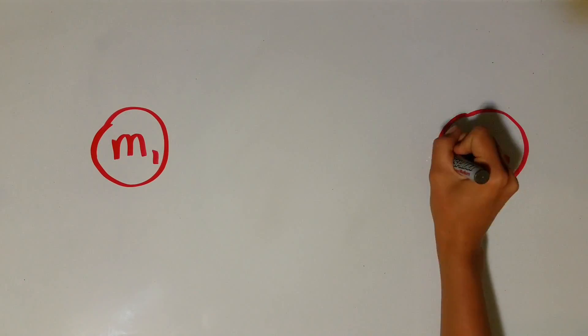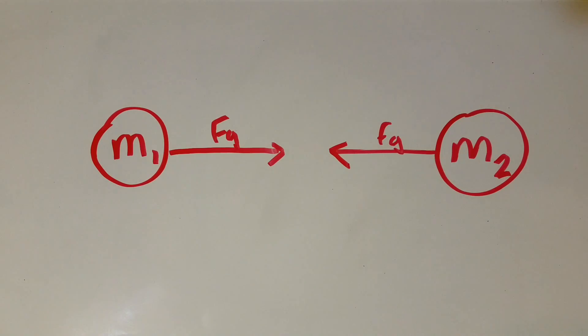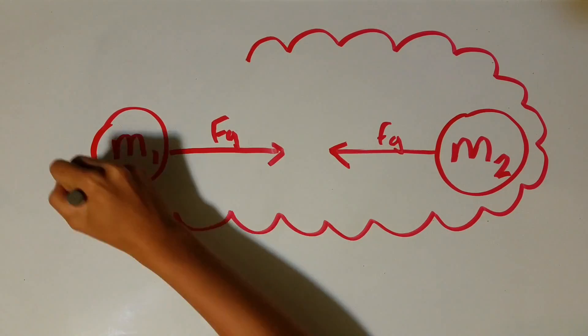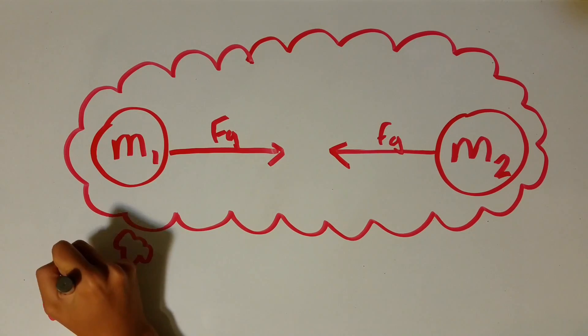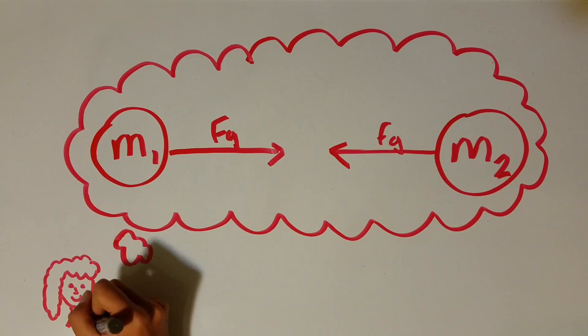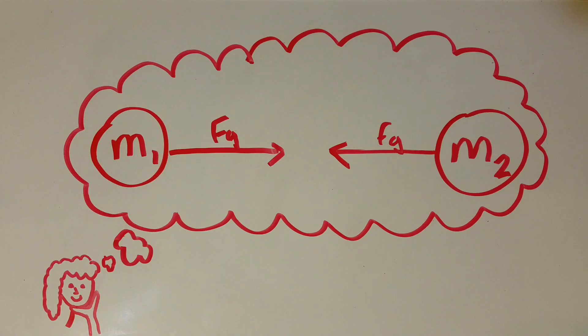However, we do know that it exists, and we know that any two masses are attracted to each other by a gravitational force. This was first published by Sir Isaac Newton, who went even further to find that these forces of attraction were directly proportional to the masses of the objects and inversely proportional to the distance between the two objects.